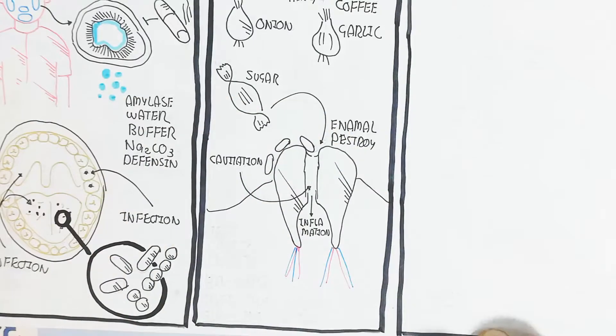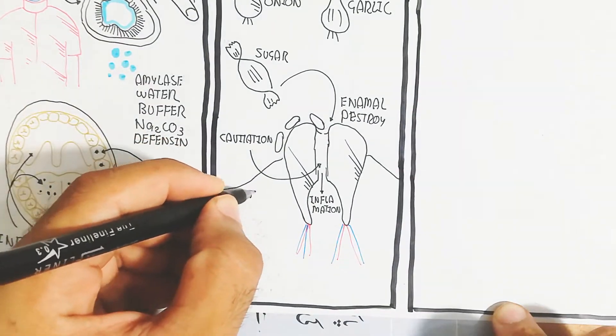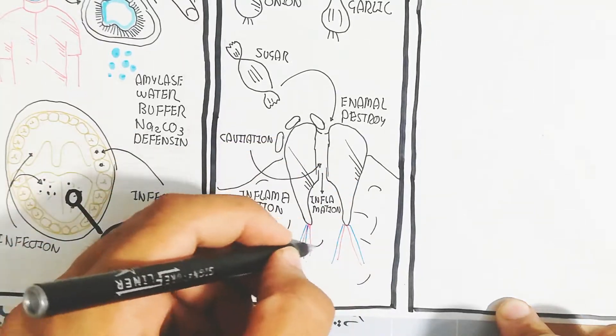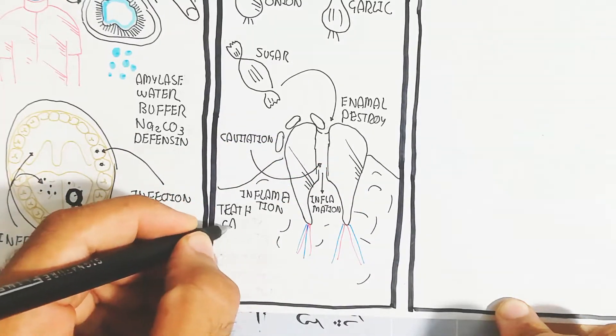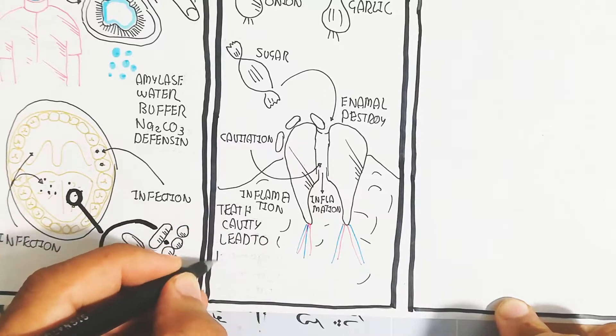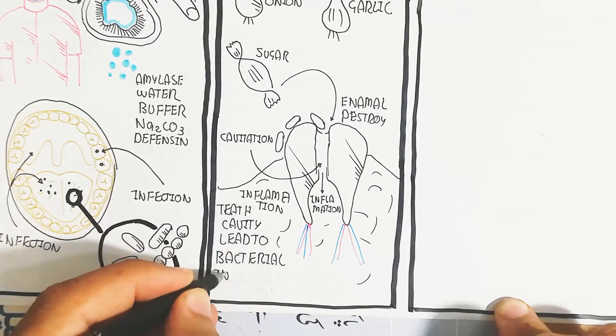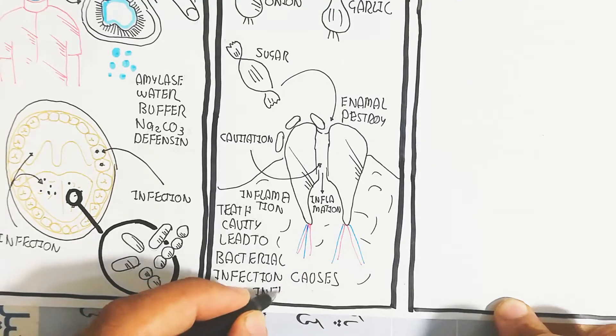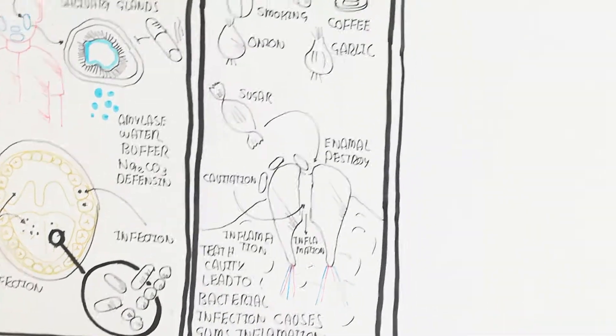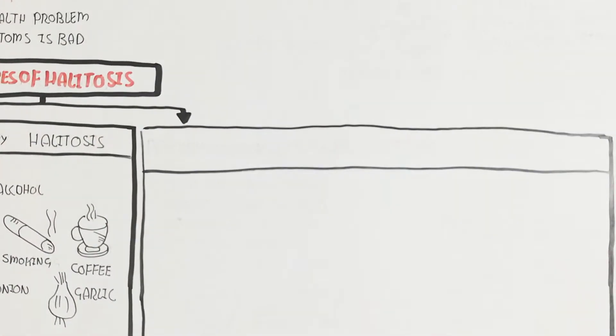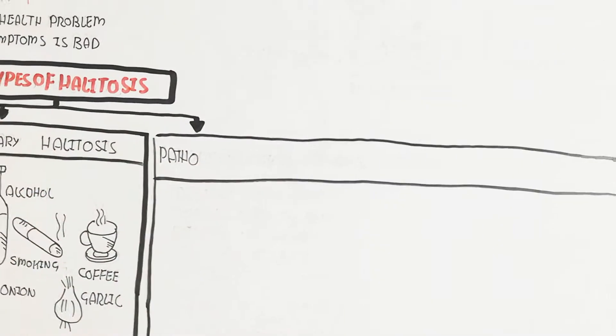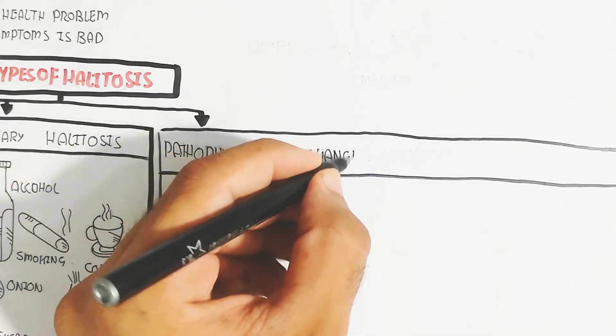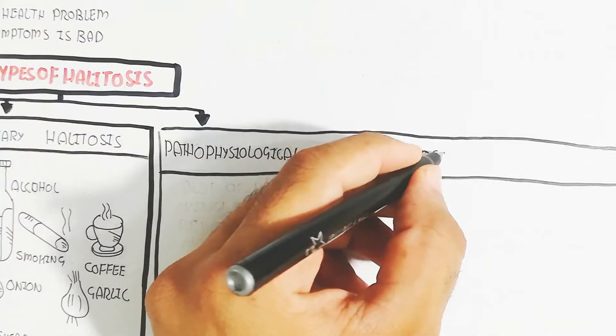Sugar is indirect because here is the enamel, the hard core of the teeth. Cavitation will occur due to sugar. Bacterial growth will enhance, leading to inflammation. The teeth cavity leads to bacterial infection causing gum inflammation, which produces bad breath. The smell is known as halitosis.